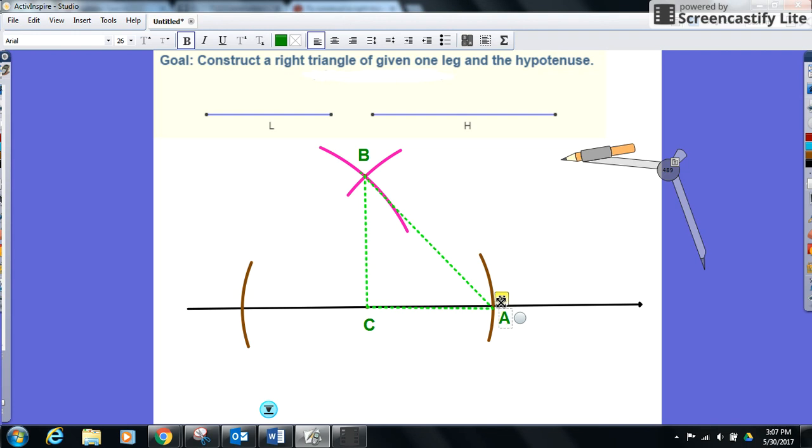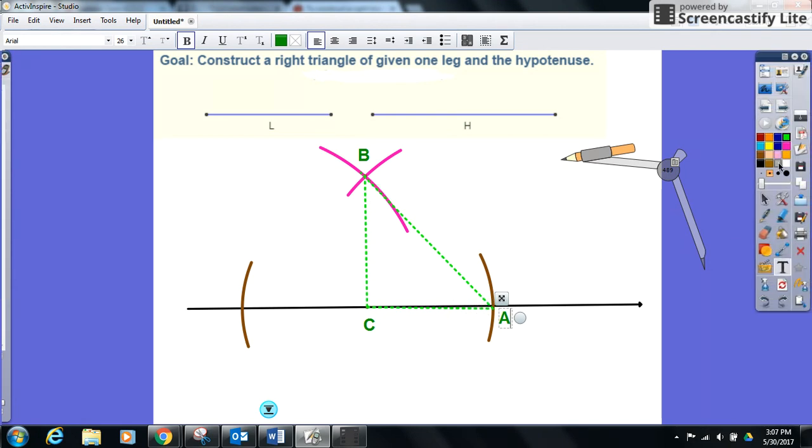And now you have right triangle ABC that measures H for the hypotenuse and L for one of the legs right here. So if you wanted to write down which one is which for whoever is grading your construction...